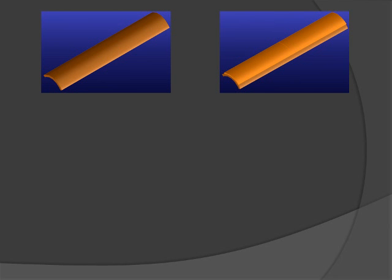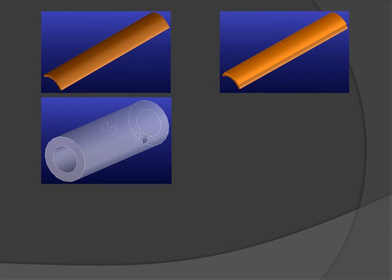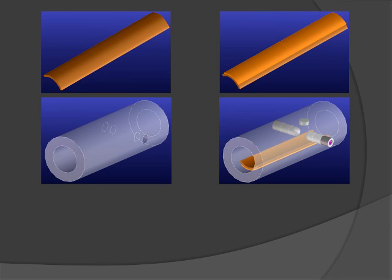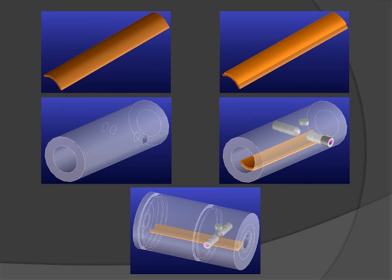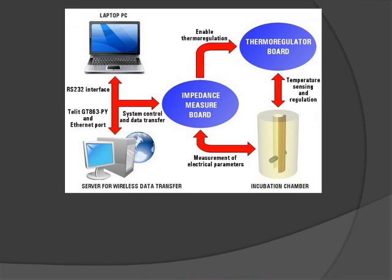The procedures for the realization of the incubation chamber are presented. First, a copper foil is used as a heat diffuser to transmit heat to the sample under test. The heat diffuser is applied with a couple of adhesive power resistances that heat the sample by Joule effect. A cylindrical support is drilled, then the stainless steel electrodes, the heat diffuser, and the temperature sensor are inserted into it. Finally, all the chamber parts are sealed with thermosetting resin.